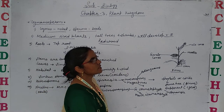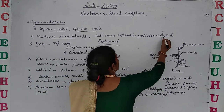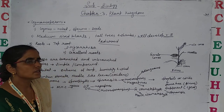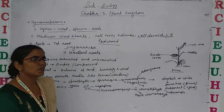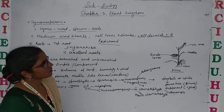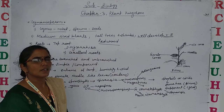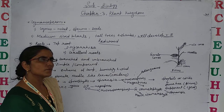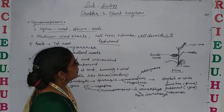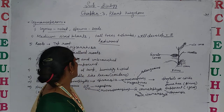Gymnosperms have well-developed vascular bundles. Vascular bundles are not properly present in bryophytes, and at some level they are present in pteridophytes, but in gymnosperms they are present in a well-developed form.